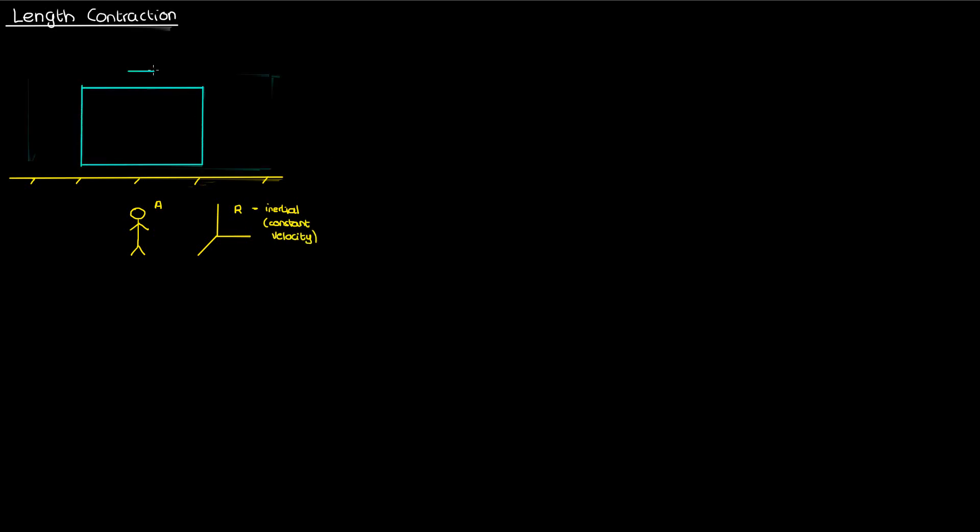Suppose also that I have a train moving at a constant velocity of V to the right, and inside this train is an observer B. The reference frame of this observer is R'. This reference frame is also an inertial reference frame because it's moving at a constant velocity.